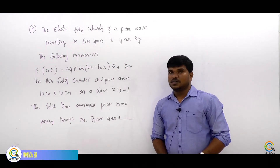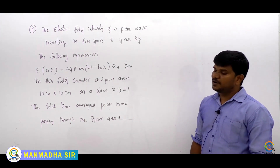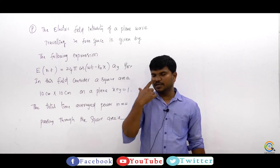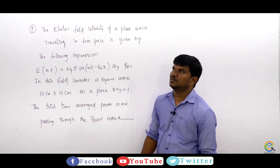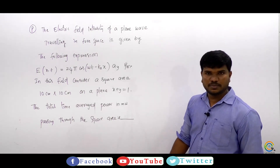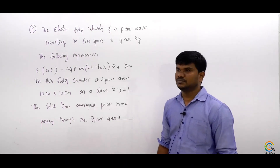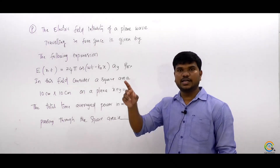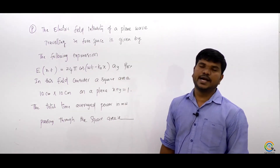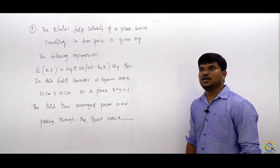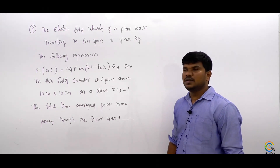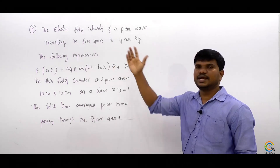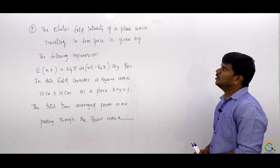Welcome. In the previous lecture, we have seen how to find the phase difference between E and H, how to identify the medium — whether it is a lossy medium or dielectric medium. We also covered how to write the EM wave equation, how to identify alpha, beta, and gamma, and how to identify the phase velocity. The entire uniform plane waves topic is very clear.